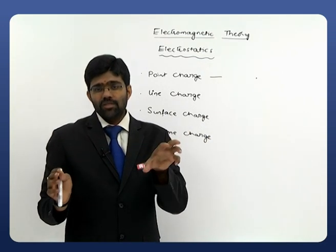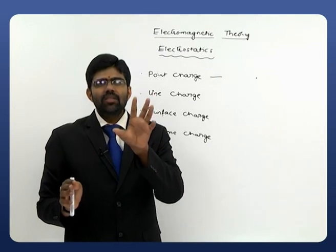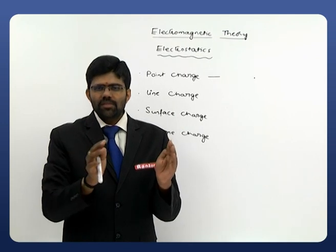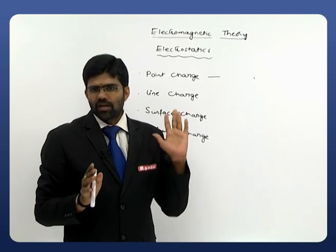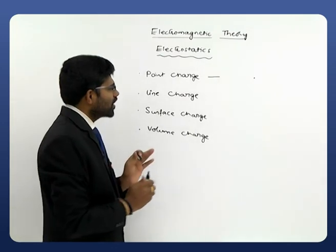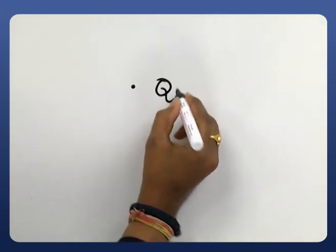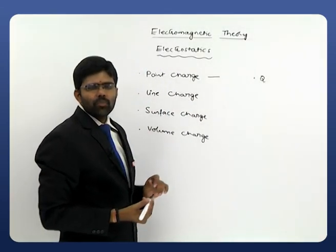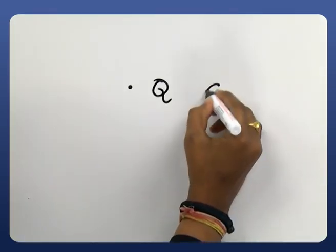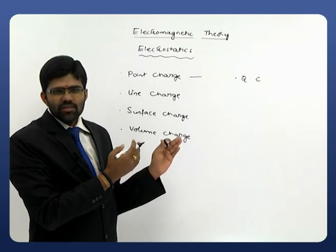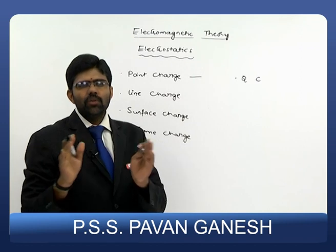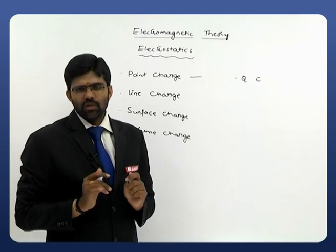Irrespective of the physical dimension of the charge — clearly remember, irrespective of the physical dimension — if the volume is small when compared with its surrounding dimensions, we can treat it as a point charge. Every point charge is represented with Q, and the units are Coulombs. Whenever we are taking a charge, this is the basic charge represented with capital letter Q and the units are Coulombs.